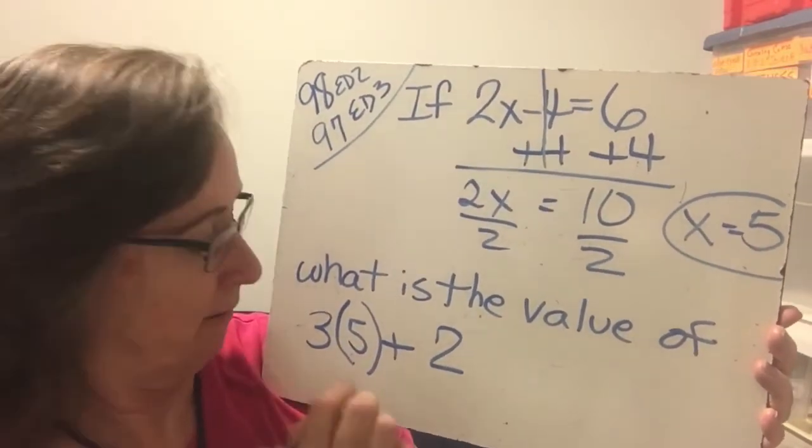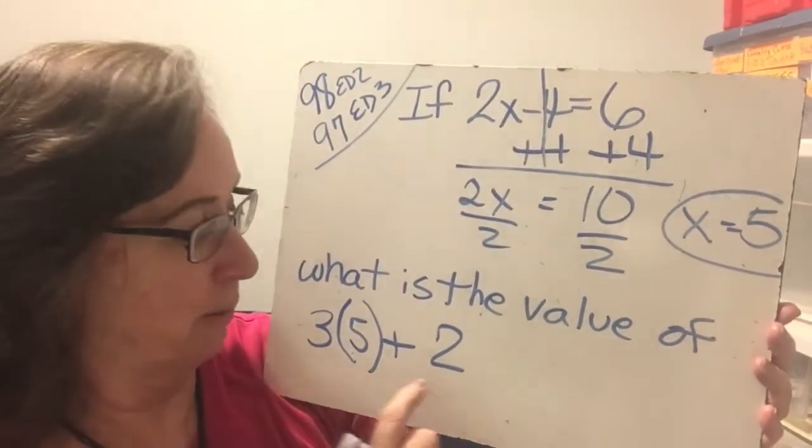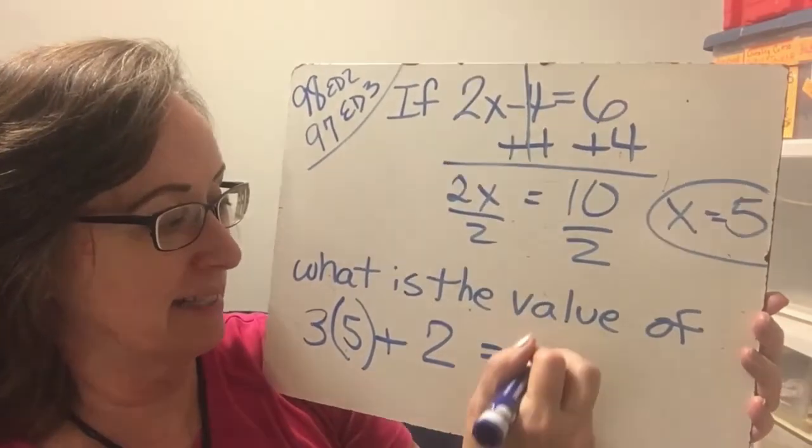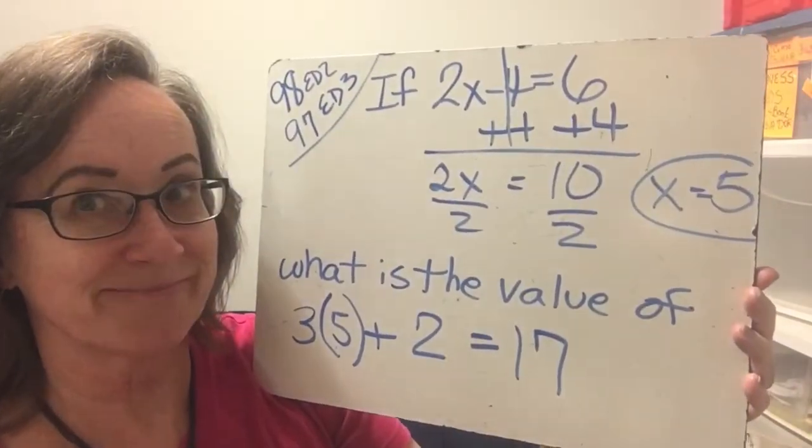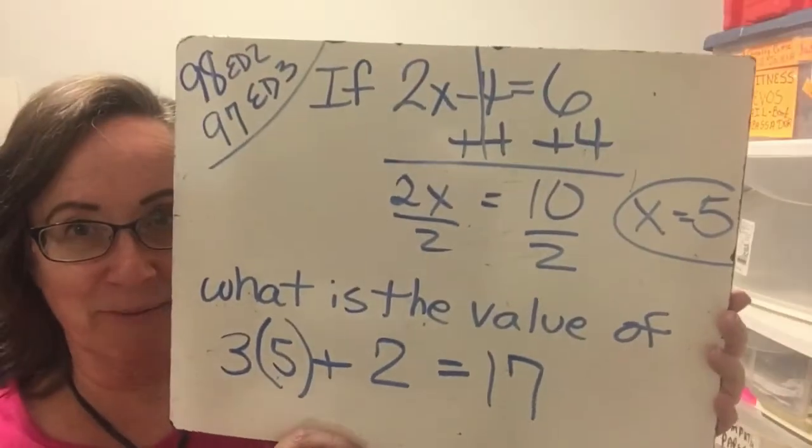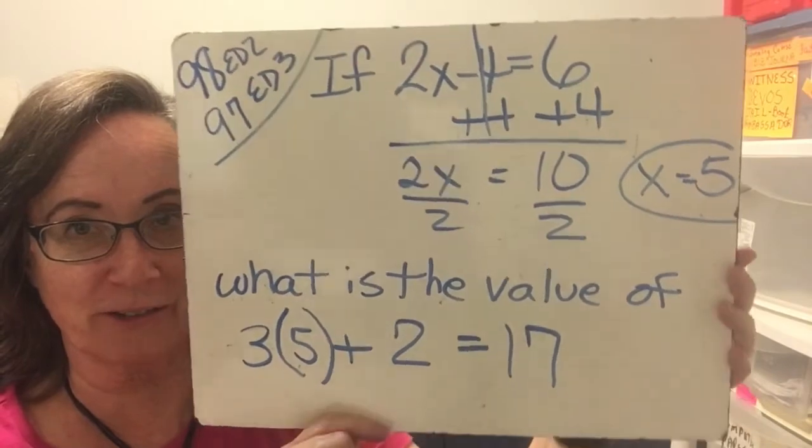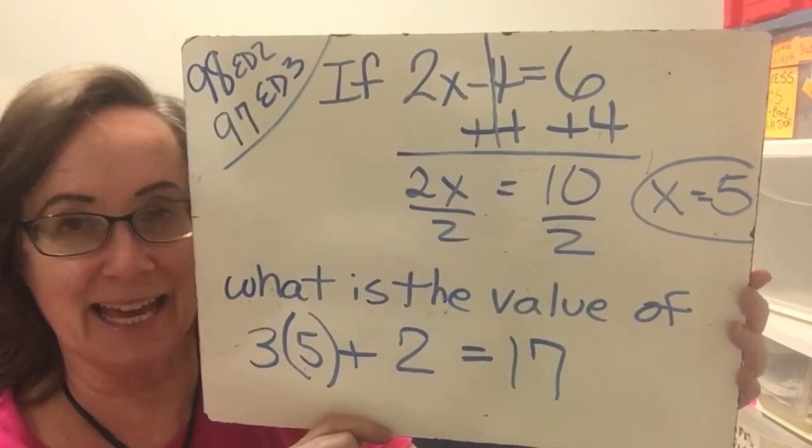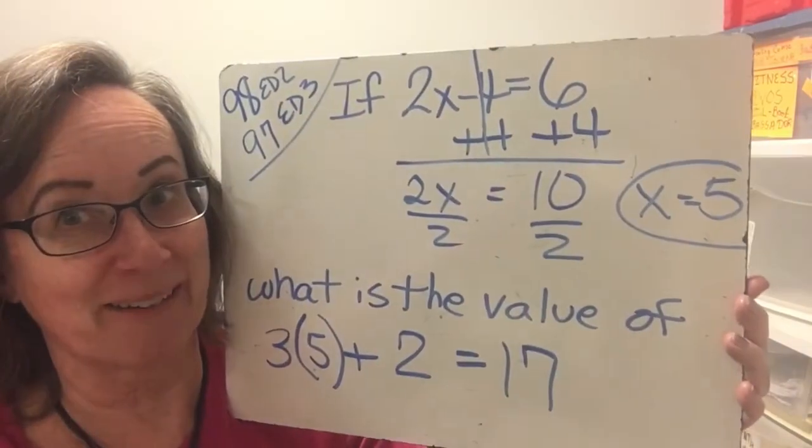So now that we've solved the clue, we can go down here and replace the x with the 5, and the mystery is solved. 15 plus 2 is 17. And that's all there is to it. So hopefully that was the answer to your first. You got that one right.